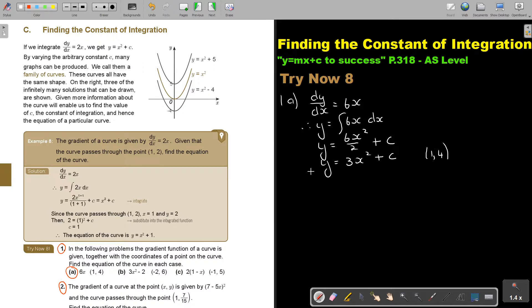So if the point is 1 and 4, I'm going to substitute it in that equation. Substitute 1 and 4, remember this is x, this is y. So in the place of y, I'm going to put the 4. And in the place of x, I'm going to put 1.